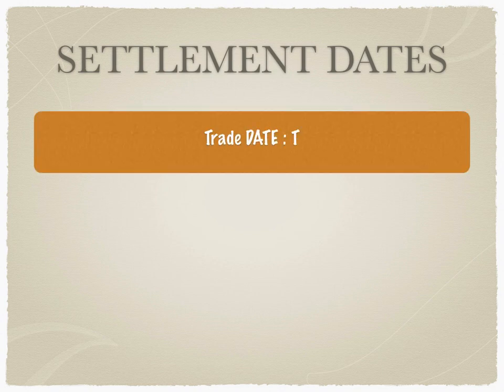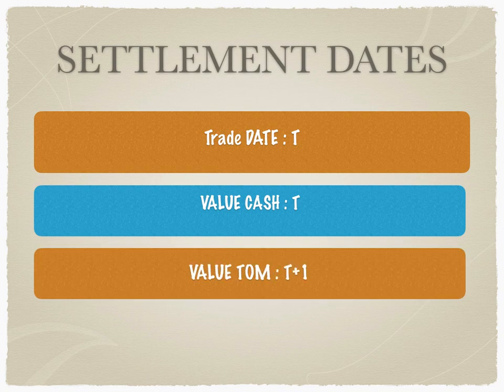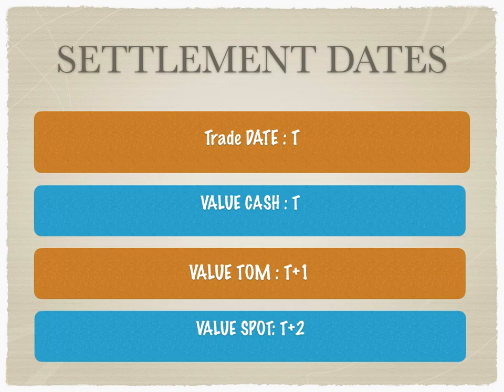The settlement dates are very standardized in FX markets. The trade date is denoted as T. If the trade is value cash, settlement takes place on the same day it is traded. If settlement is on the next working day, that is T plus 1, it is called value tom. Value spot equals T plus 2 — that is, the trade date plus 2 working days. This standardized settlement terminology is globally accepted across FX markets.